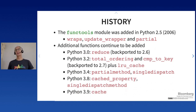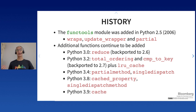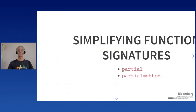functools was added in Python 2.5 in 2006. Its initial members were wraps, update_wrapper, and partial. reduce was added in Python 3.0, total_ordering and cmp_to_key in 2.7, lru_cache in 3.2, partial_method and single_dispatch in 3.4, cached_property and singledispatchmethod in 3.8, and cache in 3.9. This module continues to evolve with newer Python versions.